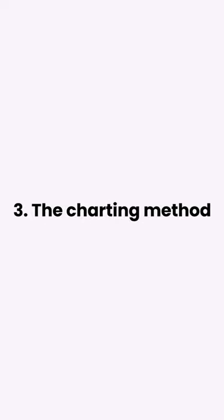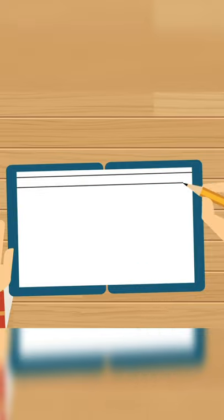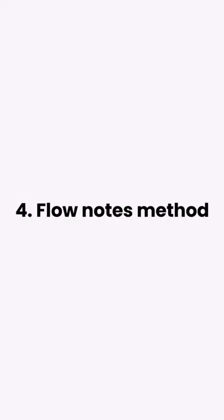Number three, the charting method. By the name itself, you have to make different columns and start adding your matter into it. For example, different columns for dates or different columns for events, people, places, etc. Number four, flow notes method.